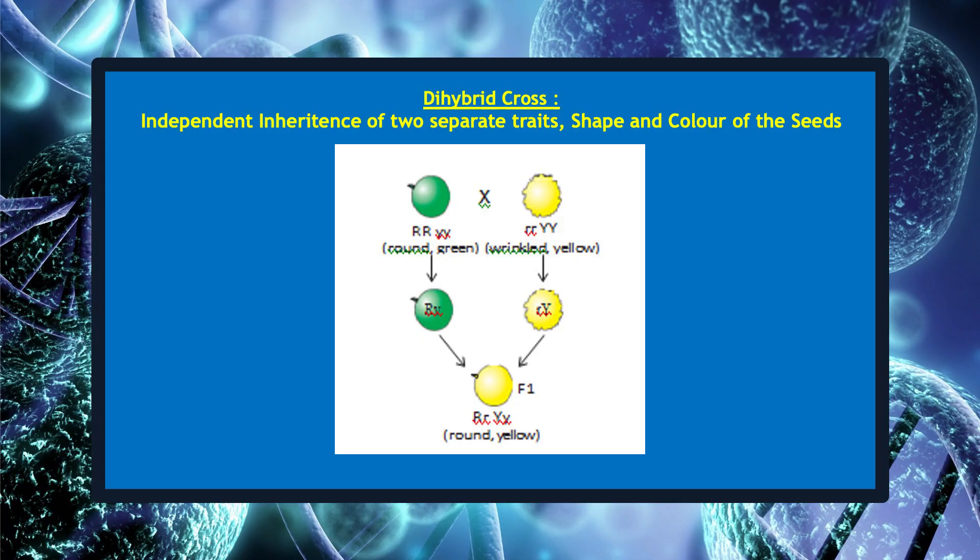We can conclude that if the interpretations of Mendelian experiments are correct, then both parents must be contributing equally to the DNA of the progeny during sexual reproduction. If both parents can help determine the trait in the progeny, both must be contributing a copy of the same gene. This means each pea plant must have two sets of all genes, one inherited from each parent, and each germ cell must have only one gene set.